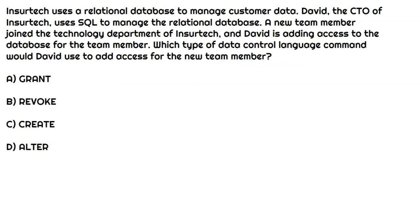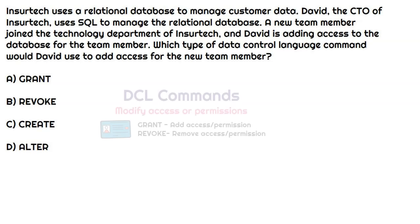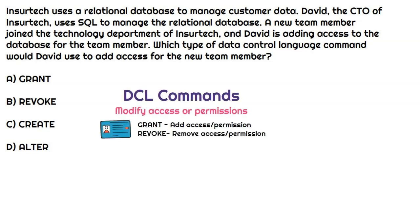This question says a new member joined the technology department of InsureTech. David, the CTO, is adding access to the database for the new team member. Which type of data control language command would David use to add access? When we're talking about access or permissions for a relational database, we're talking about DCL commands, which stands for data control language. The two main ones are grant or revoke. Since we need to add access, we're going to grant access to the new member. So the grant command is the correct answer.